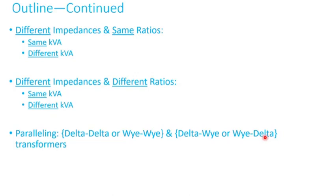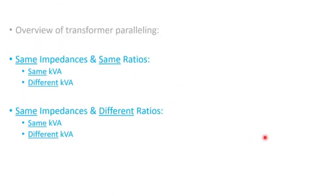If you put them in parallel, as you will see in an example, you will have circulated vars or circulated current. In this video I'll just give a quick overview, then in the following videos I'll give you examples with different parameters.